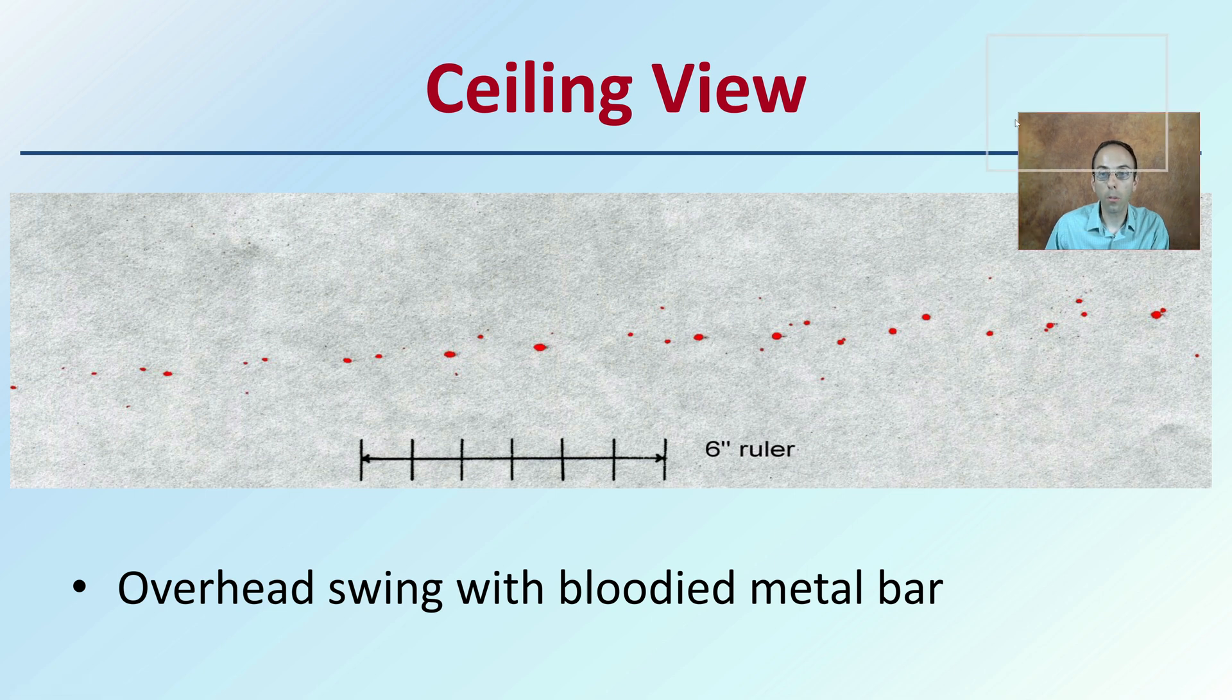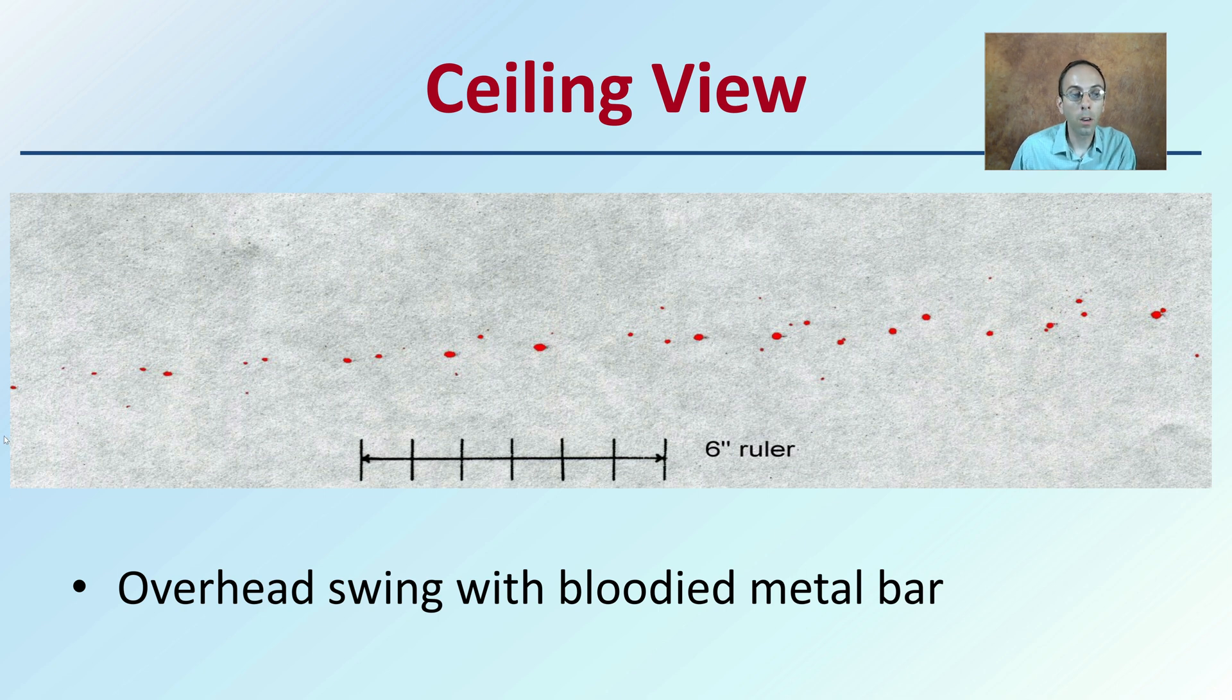The ceiling view. If we look at it from a ceiling view, an overhead swing of the bloodied metal bar, we're looking at a single inline pattern here. If you look closely, you'll be able to tell the direction of that blood.